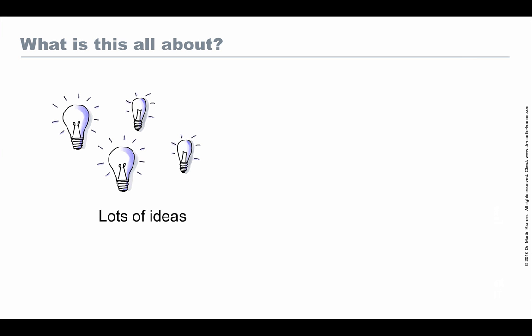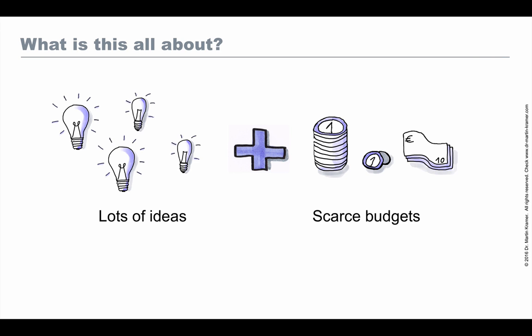So what is this all about? As a program and portfolio manager I was confronted with the situation that my colleagues and myself had lots of ideas — ideas for projects, initiatives or activities. At the same time we had scarce budgets, and that's probably the situation in many if not all IT departments. That brings us to the question: how do we spend the available budget? Which projects or initiatives do we tackle, start, or stop? How do we manage budgets to get the most out of the available budget and bring the best ideas to our customers?